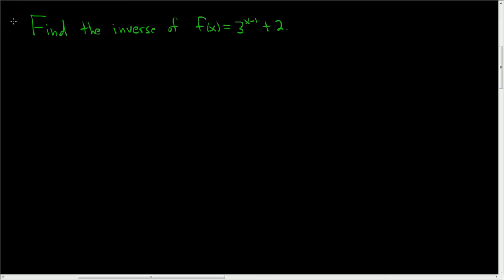Find the inverse of F(x) = 3^(x-1) + 2. Solution: The first step is to replace f of x with y, so y = 3^(x-1) + 2.